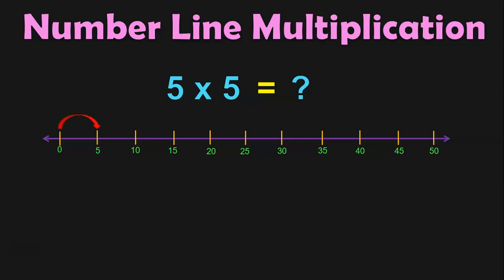In the first jump you reach number 5, second jump 10, third jump 15, fourth jump 20, and in the fifth jump you reach number 25. So, 5 into 5 is equal to 25.